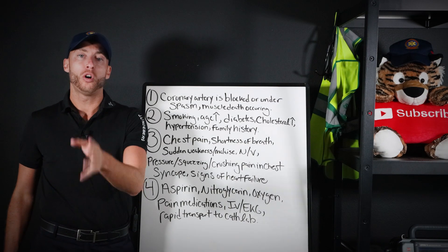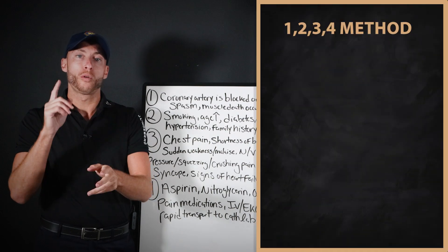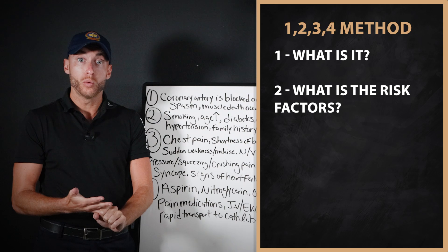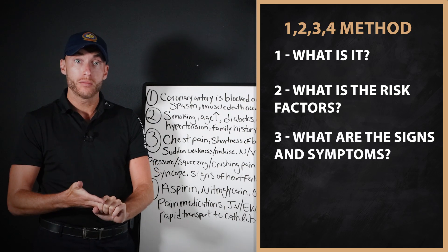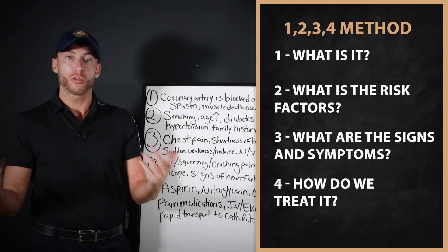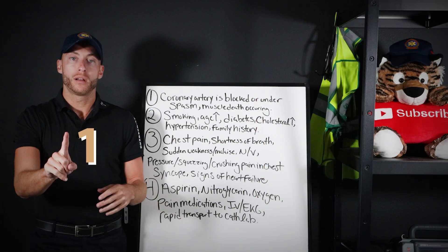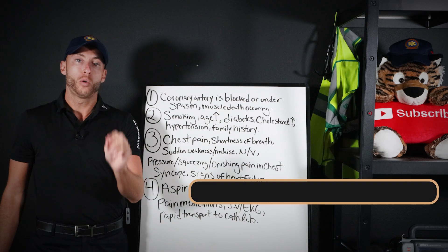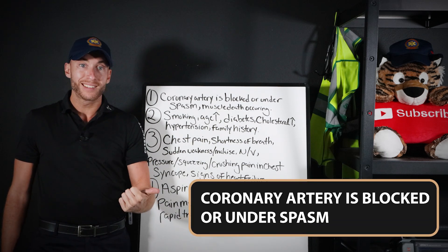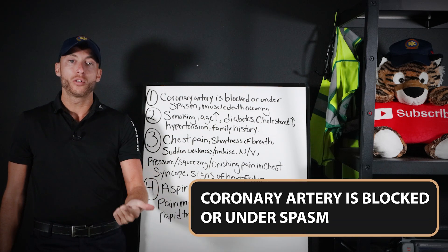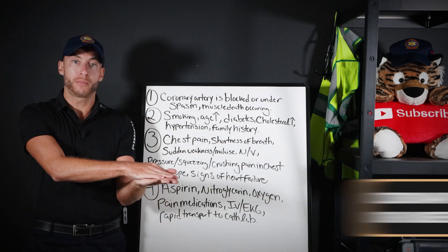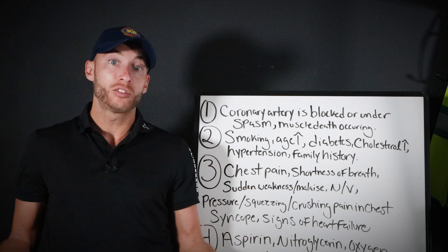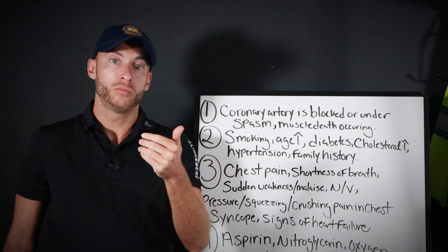How do you learn anything in medicine? It's called the 1-2-3-4 method. One: what is it? Two: what are the risk factors? Three: what are the signs and symptoms? Four: how do we treat it? Number one — simply, what is a heart attack? The coronary artery is being blocked, or it's under severe spasm, clamping down. One of those two — that's what's occurring — which leads to the heart muscle and tissue dying.